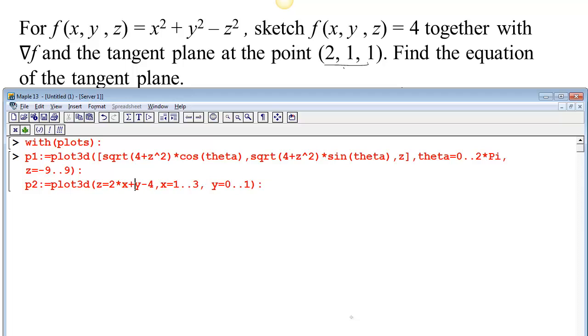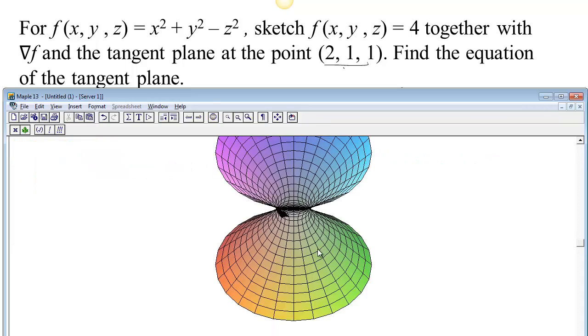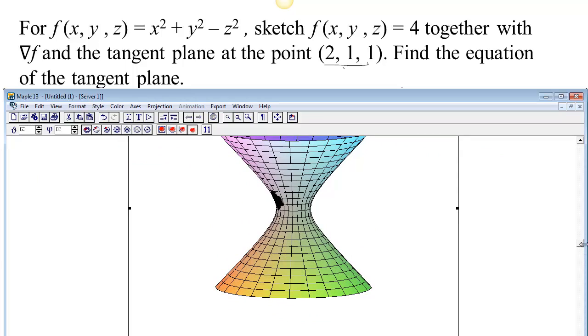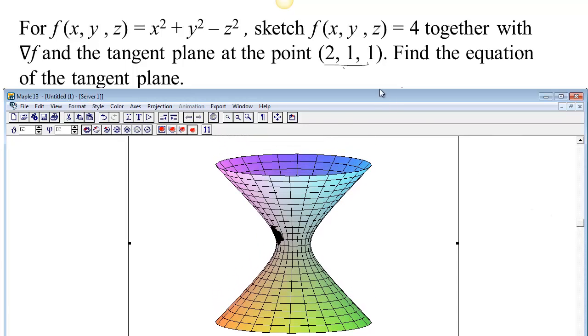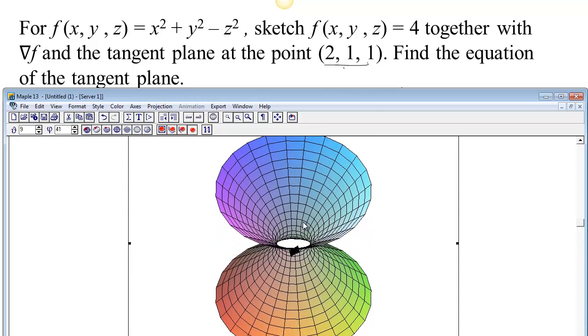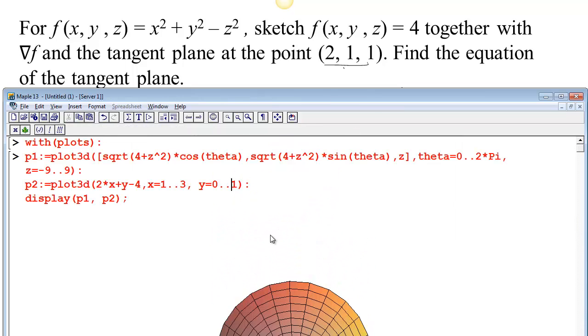And in plot3d, you don't give a name to the output variable. Now display plots 1 and 2. And let's see if we get anything. It's working hard. So we got our hyperboloid, and it looks like we got a bit of a tangent plane there.